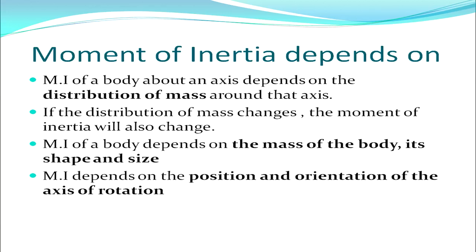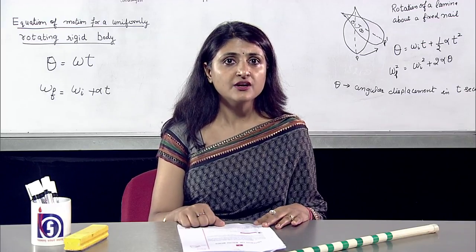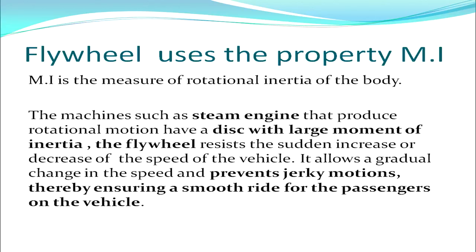The moment of inertia depends on several factors. First, it depends on the distribution of mass around the axis — if the distribution changes, the moment of inertia changes. It also depends on the mass, shape, and size of the body, and on the position and orientation of the axis of rotation. A very nice application of moment of inertia is the flywheel, which uses the property that moment of inertia is the measure of rotational inertia of the body. Machines such as steam engines that produce rotational motion have a disc with large moment of inertia. The flywheel resists sudden increases or decreases in speed, allowing gradual changes and preventing jerky motion, thereby ensuring a smooth ride for passengers.